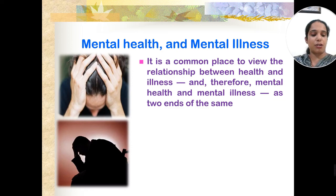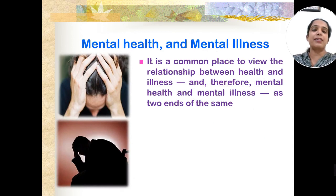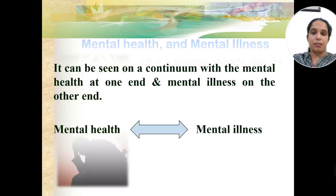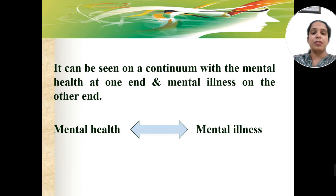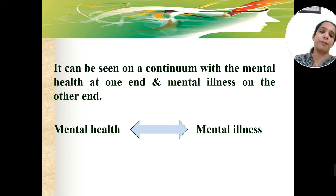Now we look at the relationship between mental health and mental illness. It is common to view mental health and mental illness as the two ends of a spectrum — on one end we have mental health and on the other end we have mental illness. A person cannot be at both ends at the same time — they are either mentally healthy or they have a mental illness.